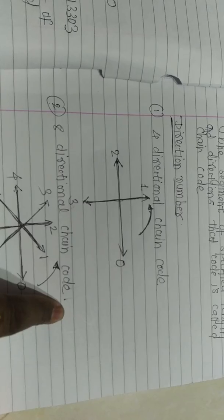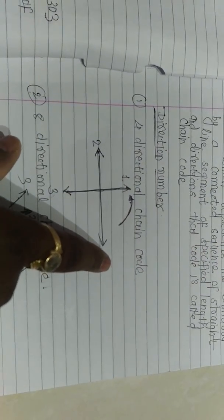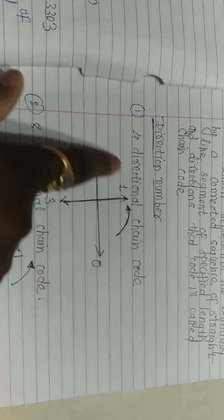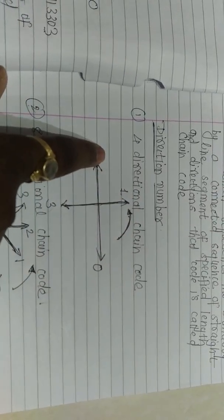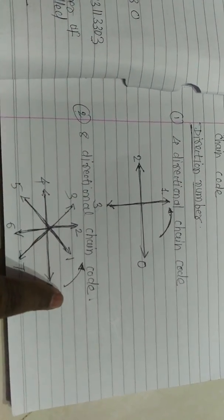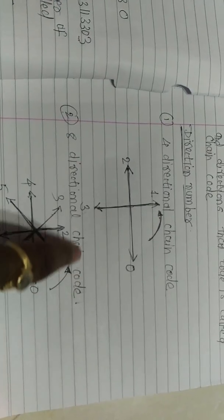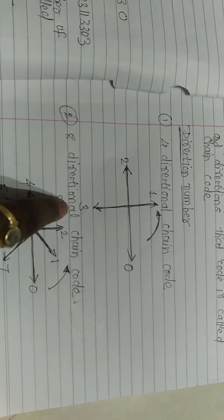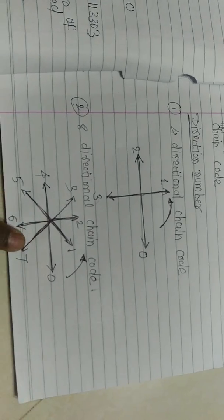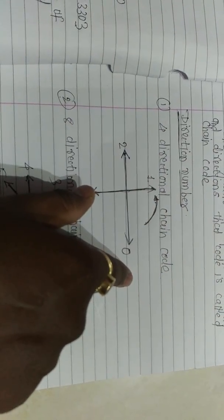In the four-directional chain code there are only four direction numbers: 0, 1, 2, and 3. You always have to take the direction in the anti-clockwise direction. In the eight-directional chain code there are a total of eight direction numbers from 0 to 7. Again, you have to consider the anti-clockwise direction in both four-directional as well as eight-directional chain code.